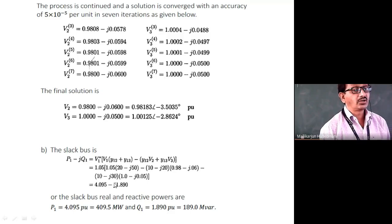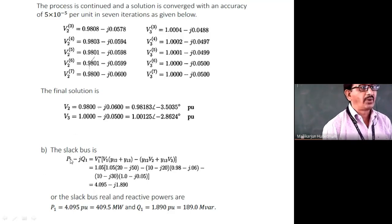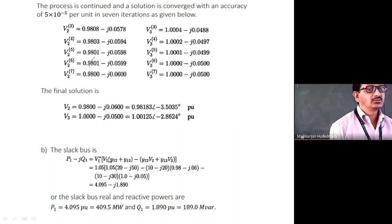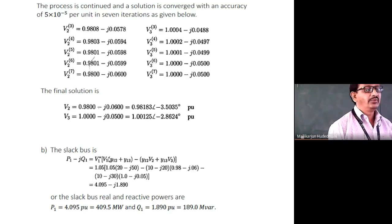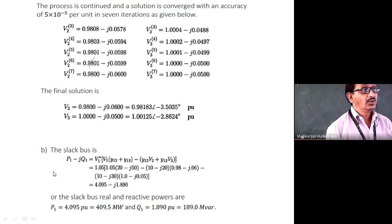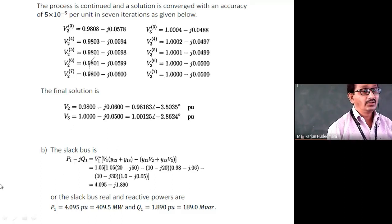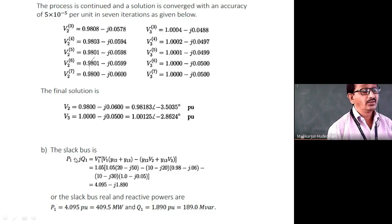The new quantity to compute is the power supplied by the slack bus. Since there is no other generator, we want the active and reactive power delivered by the slack bus. The complex power is S1 = V1·I1*. To separate active and reactive power, take S1 conjugate: P1 − jQ1 = V1*·I1. This equals V1 conjugate multiplied by the bus current I1.